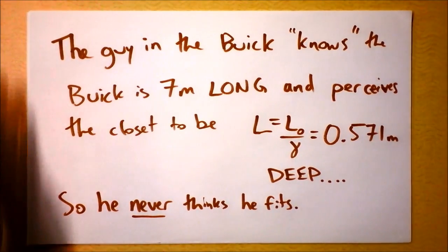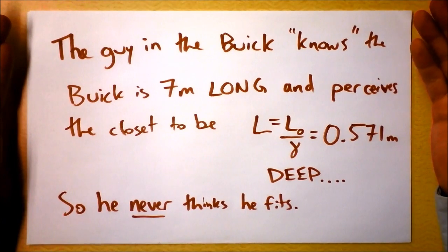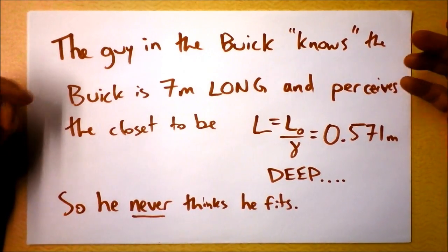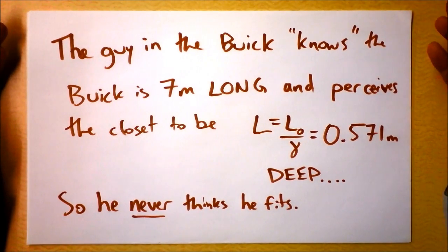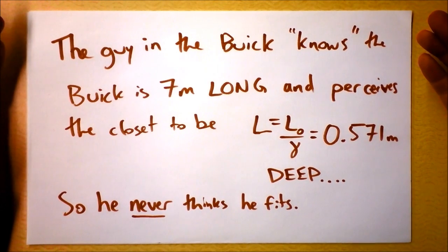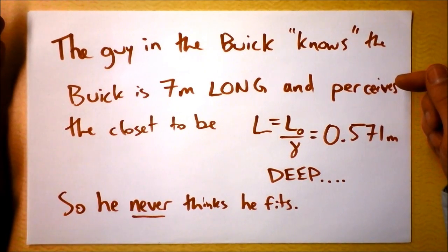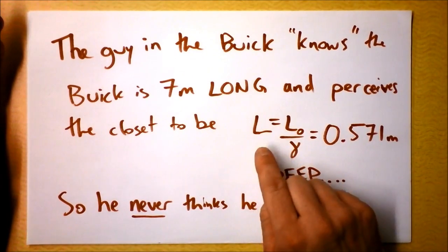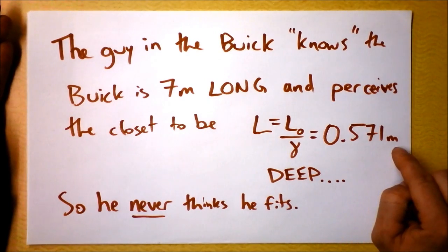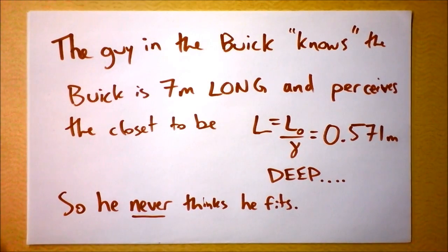Sorry, I couldn't resist this. Relativity is such a pisser. Here's the thing, the guy in the Buick knows the Buick is seven meters long, because he's at rest relative to the Buick. And he perceives the closet not as its natural length, not as its proper length, but he sees the closet modified by the speed at which the closet is rushing towards him. So he said the closet is only 57 centimeters deep and he's like, I've got a seven meter long Buick, I'm not going to fit in a 57 centimeter deep closet. So he never thinks it fits. At the same time, someone outside of the Buick watching will see the Buick fit in the closet, but the guy in the Buick knows it never did. Who's right? Both of them.